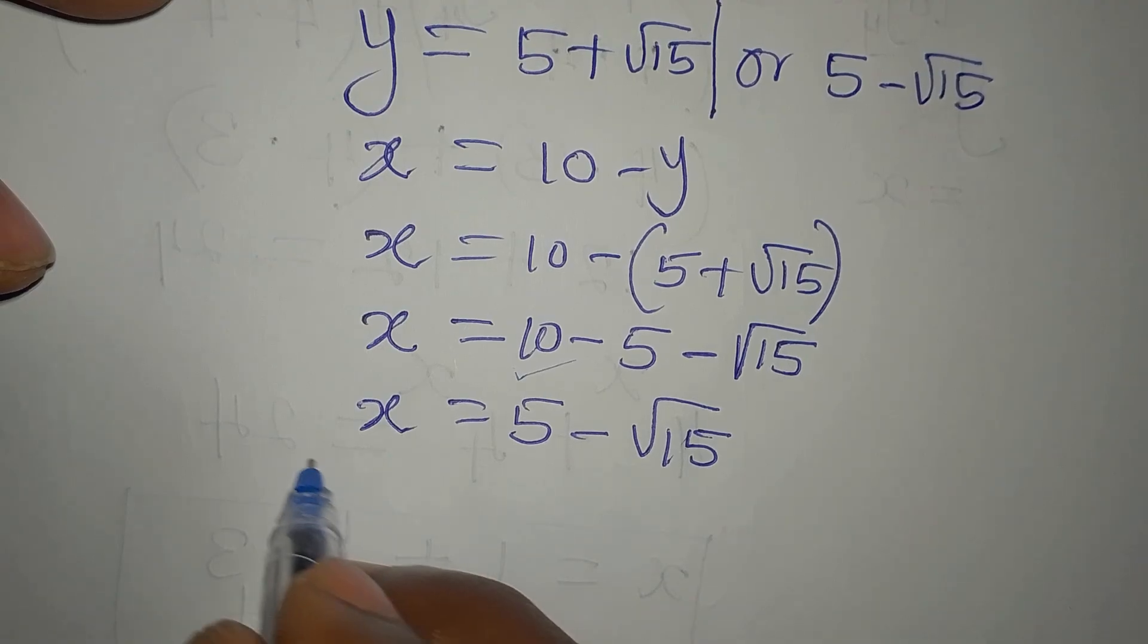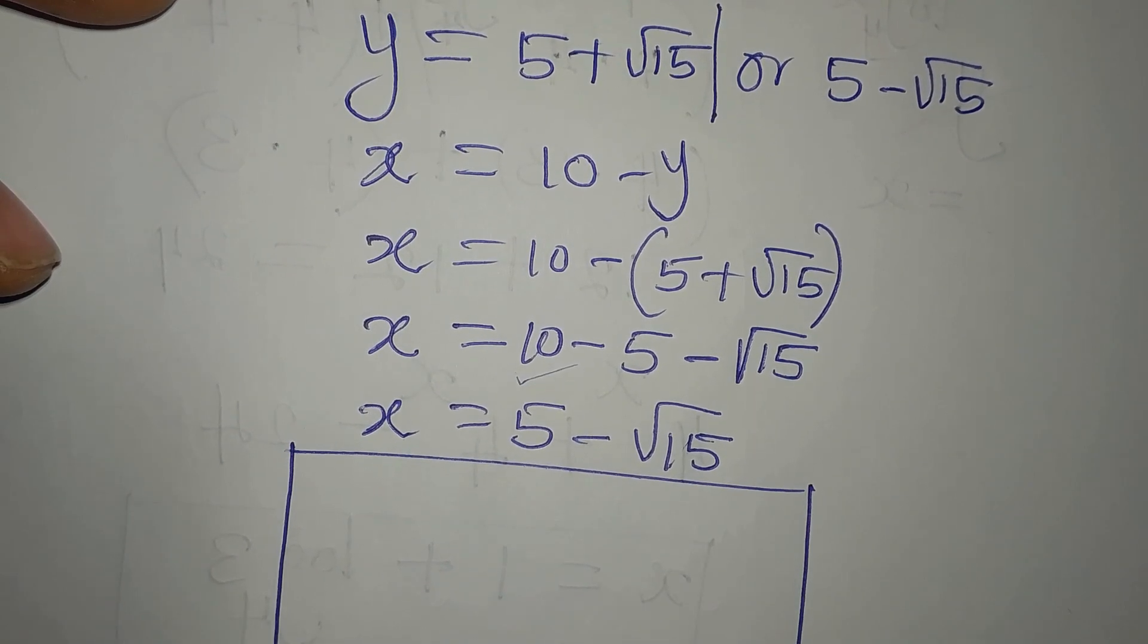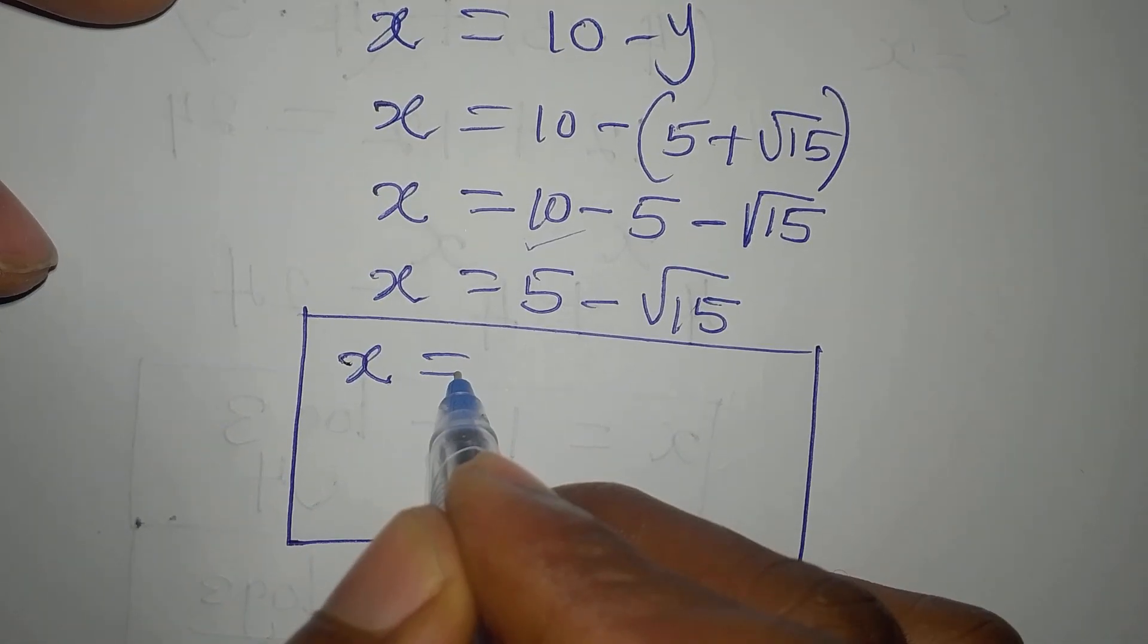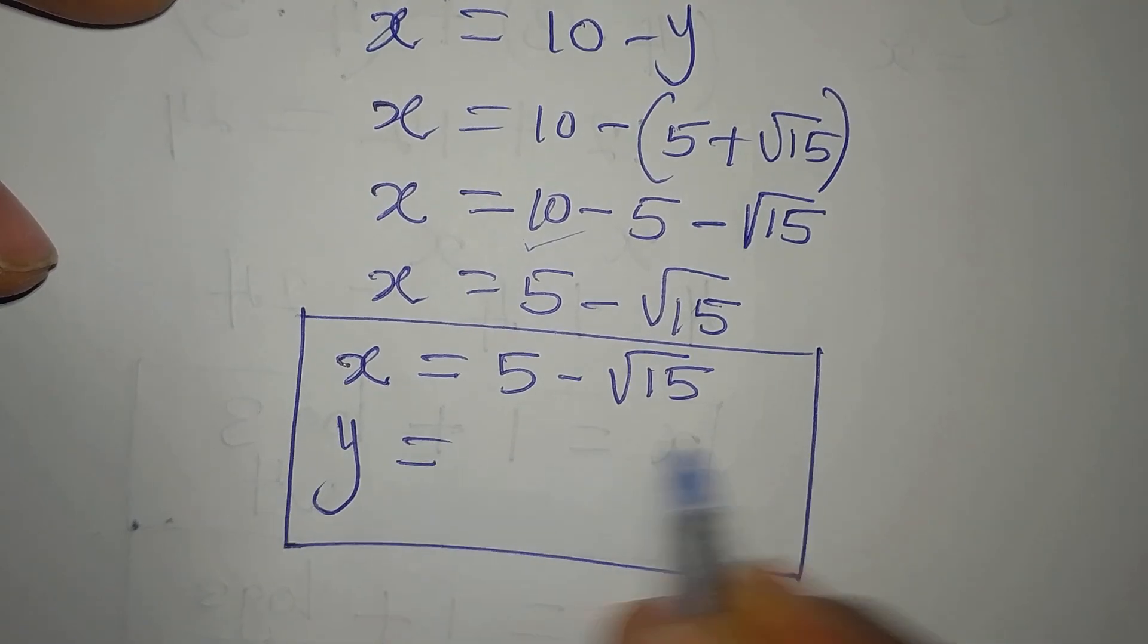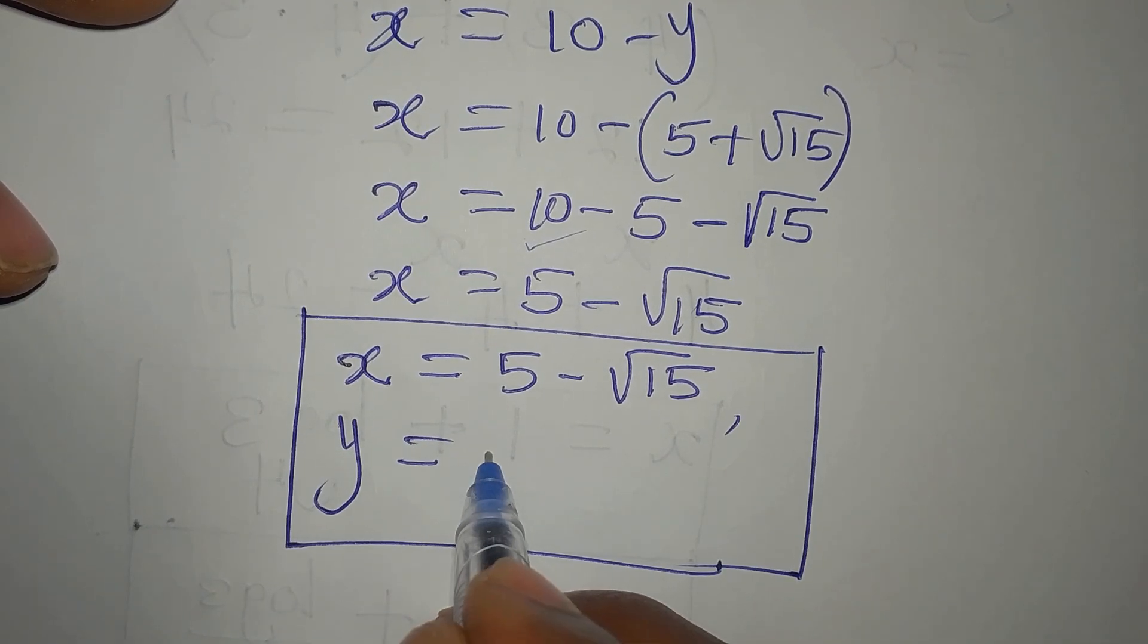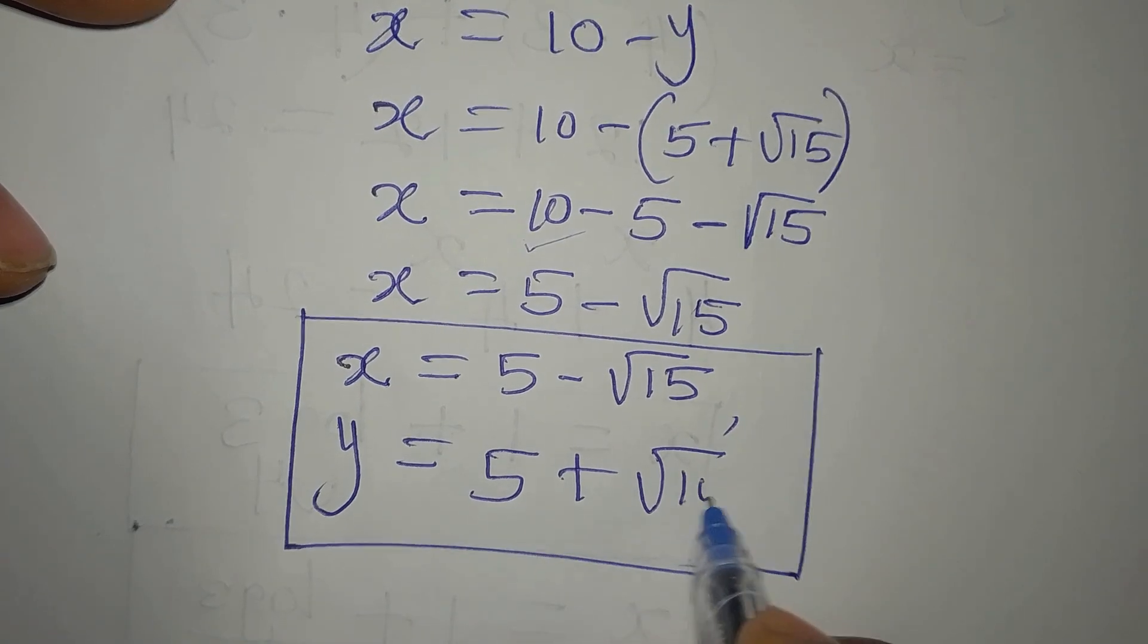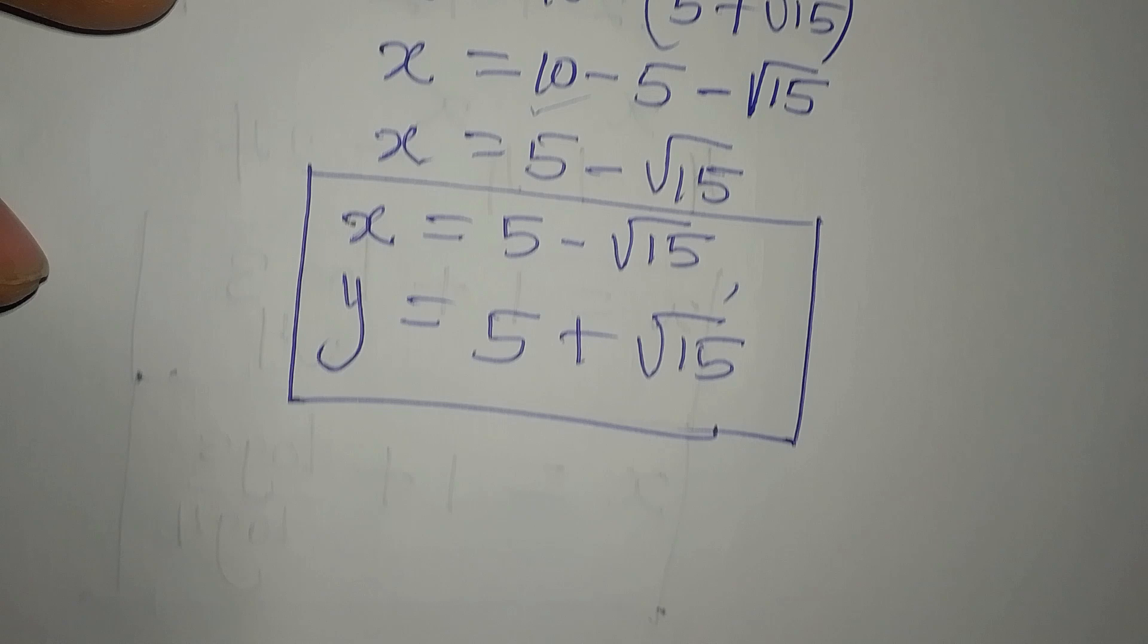So from here now, we can say that when X is equal to 5 minus root 15, Y is equal to 5 plus root 15.